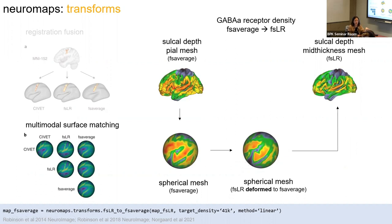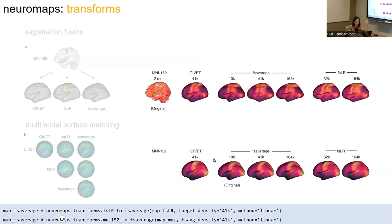Here's an example using the GABA-A receptor density data, originally available in FS average space at 164,000 vertices per hemisphere. Here it is on the spherical mesh, and then we can deform it using the transformation from the sulcal depth maps and project it back onto FSLR. You can see we went from FS average to FSLR. The original map was in MNI 152 2mm, and here's how it looks in all the different spaces after applying the transformation. Visually it looks pretty good.